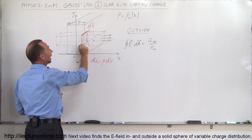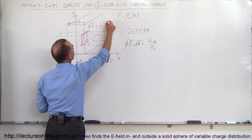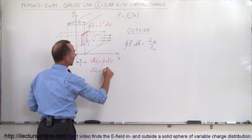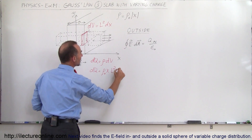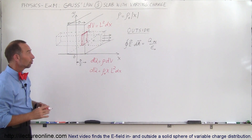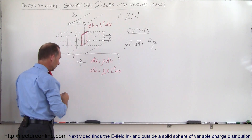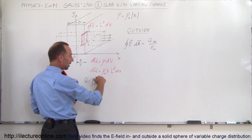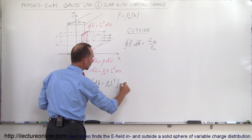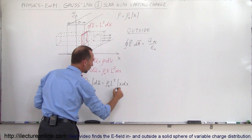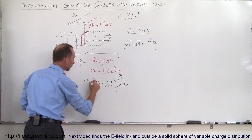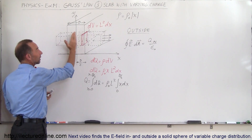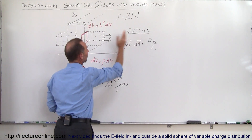Let's say the cross-sectional size is L by L, so dV = L² dx, and the charge density is ρ₀ times x. So dQ = ρ₀ · x · L² dx. To find the total charge in the half-slab, we integrate: Q = ρ₀ L² times the integral of x dx from x = 0 to x = d/2. That's the limit of integration for the outside case — from the center to the edge of the slab.